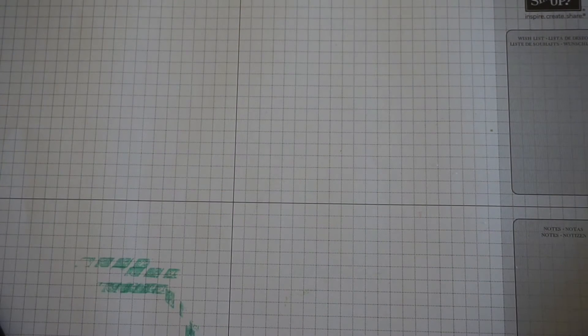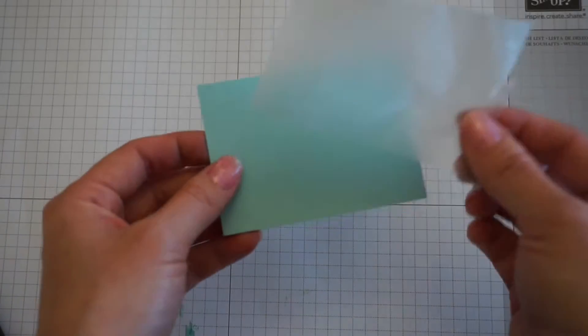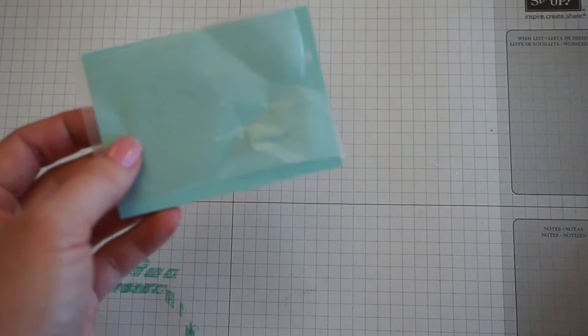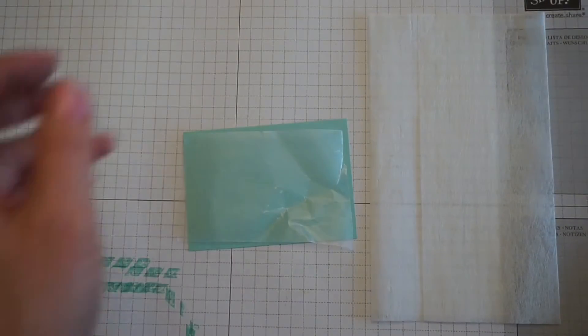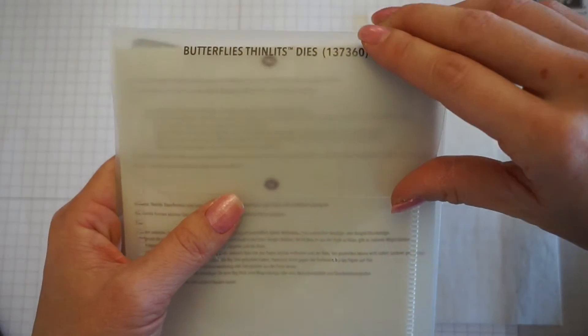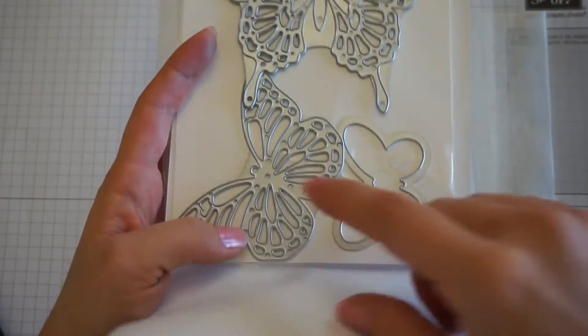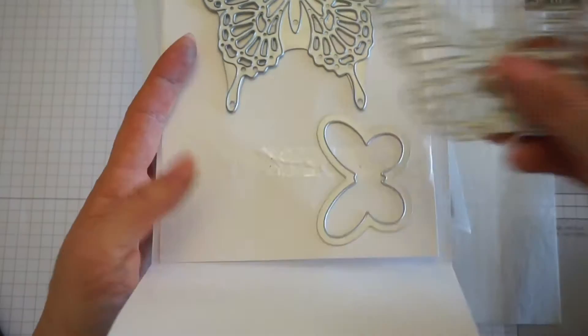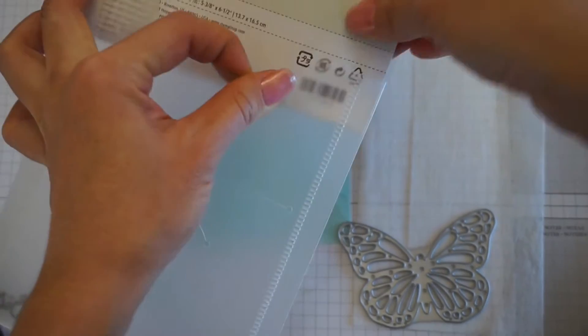Then we'll move on to the butterfly. You'll need your pool party and your pool party paper, your wax paper, and a dryer sheet, as well as the butterfly thinlits dies. This coordinates with the butterfly basic stamp set. You can get it as a bundle and they do offer that 15% off if you bundle it.